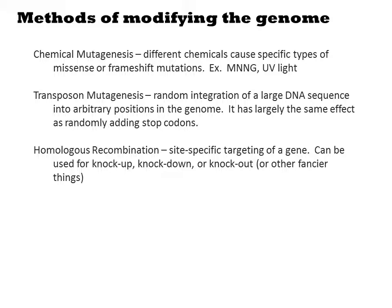Transposon mutagenesis similarly involves random modifications to the genome. Here you transfer a DNA that inserts itself into random sites of the genome. Whenever the transposon inserts into a gene, its function is ablated by disruption of the protein sequence.